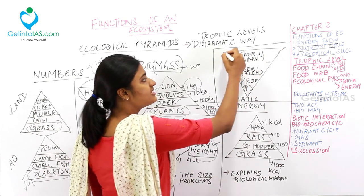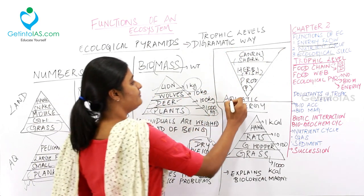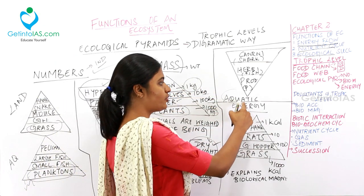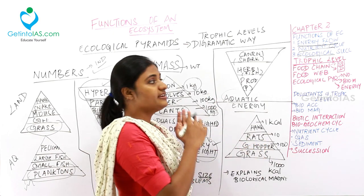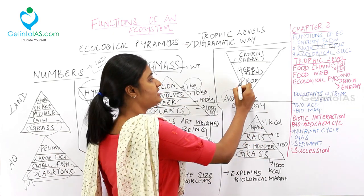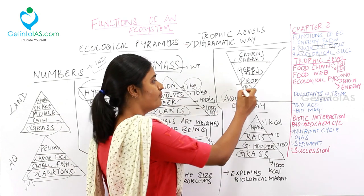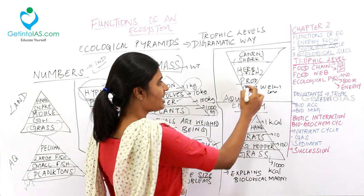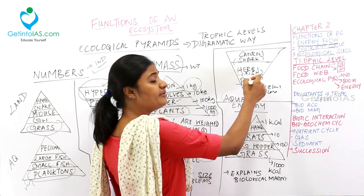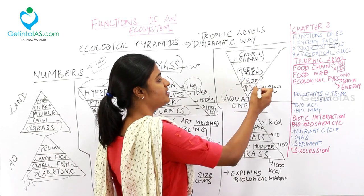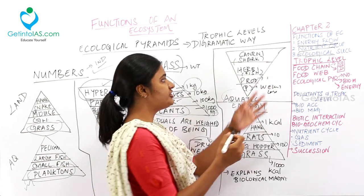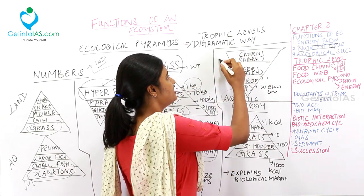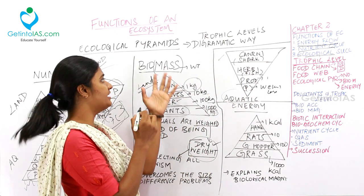In the aquatic biomass system, it is also upright. The producers are at the bottom because the dry weight of producers will be less. Next come the primary consumers (smaller fish), then larger fish, then the top carnivore — same pattern as the land system in biomass.